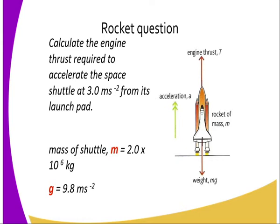So in this case, calculate the engine thrust required to accelerate the space shuttle at 3.0 meters per second squared from its launch pad. Remember that for every action, there is a reaction.